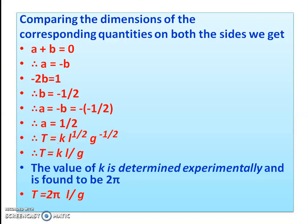Putting k equal to 2π, the formula becomes T is equal to 2π times the square root of L upon g.